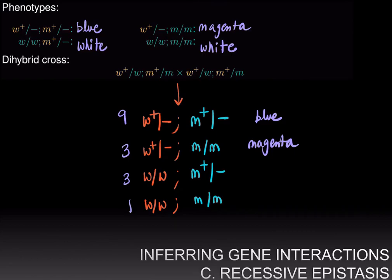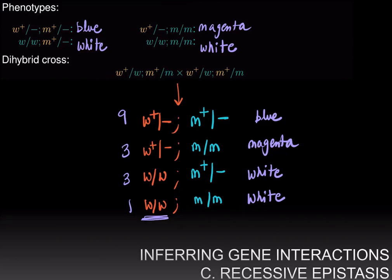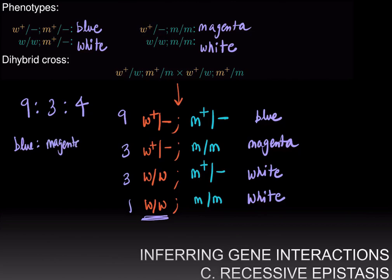If you are mutant for the first gene you are white. Since W is epistatic to M, in the double mutant the recessive allele of W hides the phenotype of M: instead of seeing magenta you see white. Therefore the ratio we obtain is 9 blue : 3 magenta : 4 white, and that is the modified 9:3:3:1 ratio observed when there is recessive epistasis.